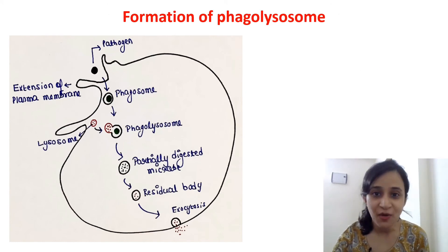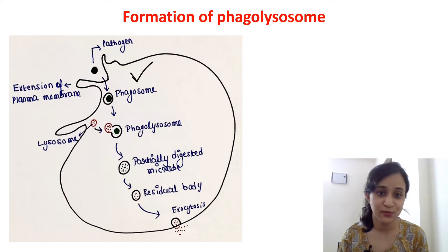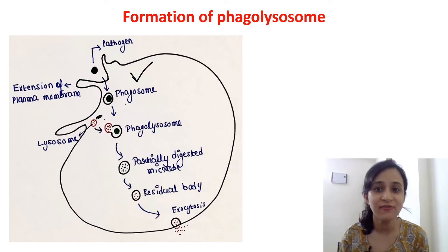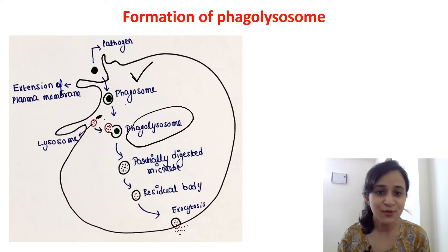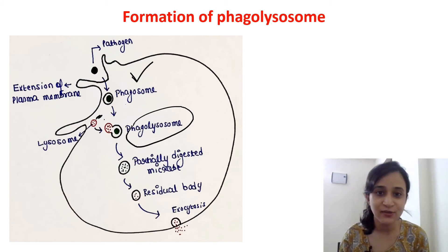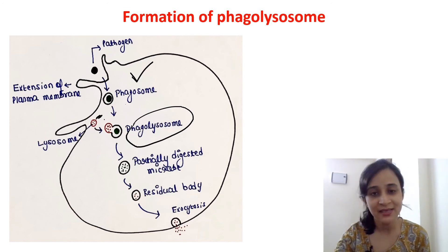The next step is formation of the phagolysosome. The phagosome that has just formed will fuse with a lysosome. After this fusion, the whole structure is now called the phagolysosome — it contains both the phagosome and the lysosome. So, phagolysosome is now formed.